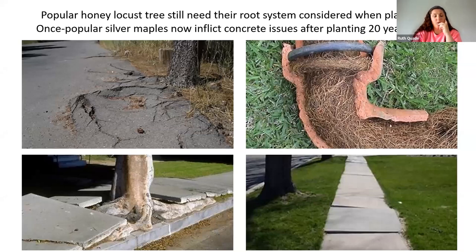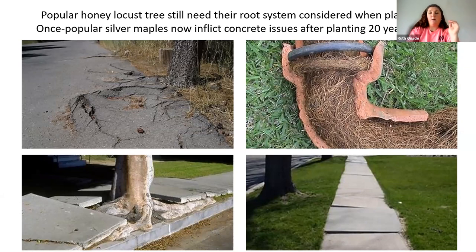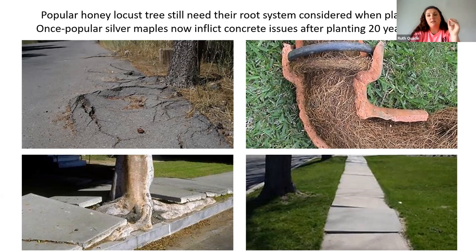Here are examples of tree root problems. Poplar and honey locust trees still need their root systems considered. They're very popular right now because they grow fast, get big, give shade, and don't drop a lot of leaves. But whenever I'm designing, I put them 20 feet away from the house at all times, so the root system has 20 feet from the house before it can ever come near it.